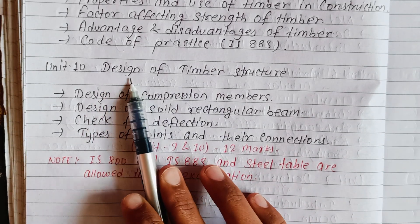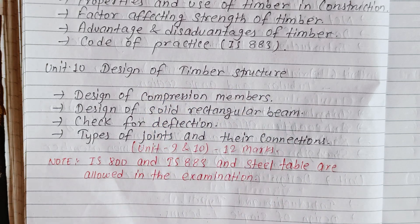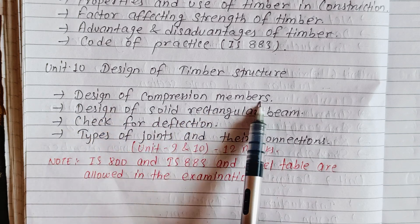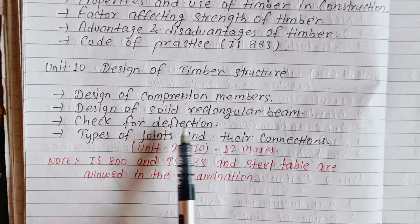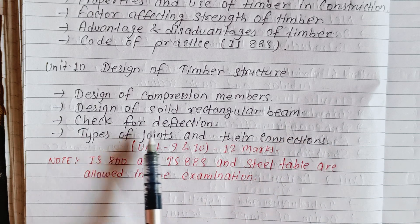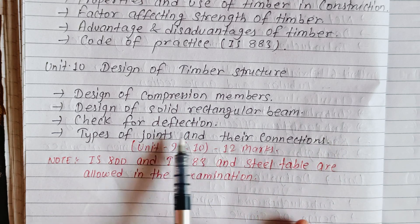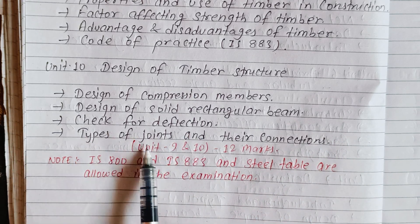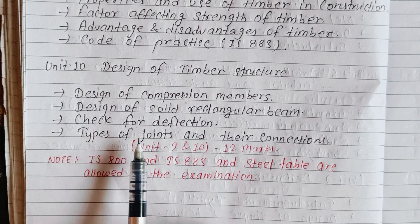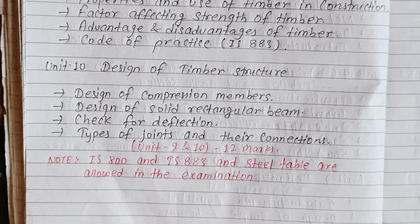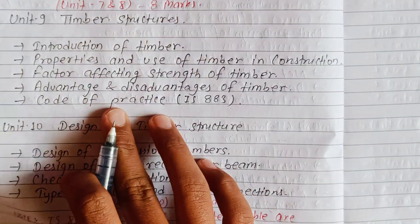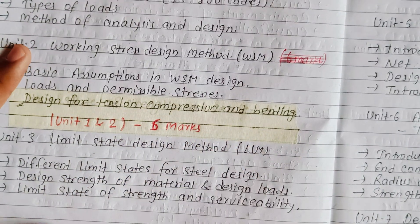Unit 10 covers design of timber structures, including design of compression members, design of solid rectangular beams, design check for deflection, anti-moisture treatment, and types of joints and connections. Units 9 and 10 carry 12 marks total, making the overall total 40 marks.